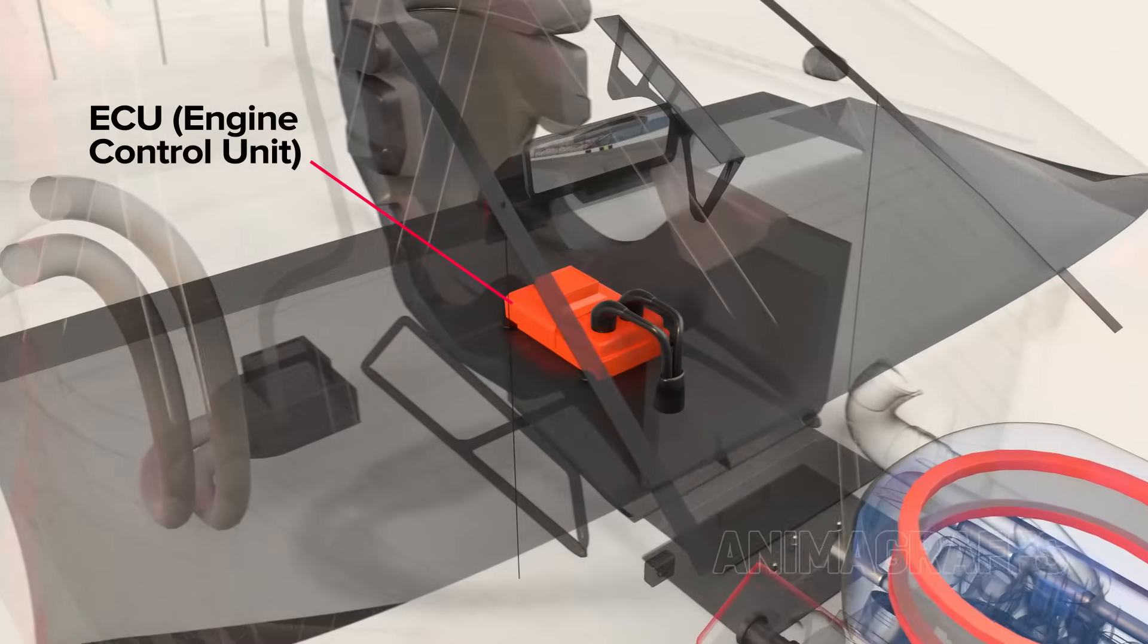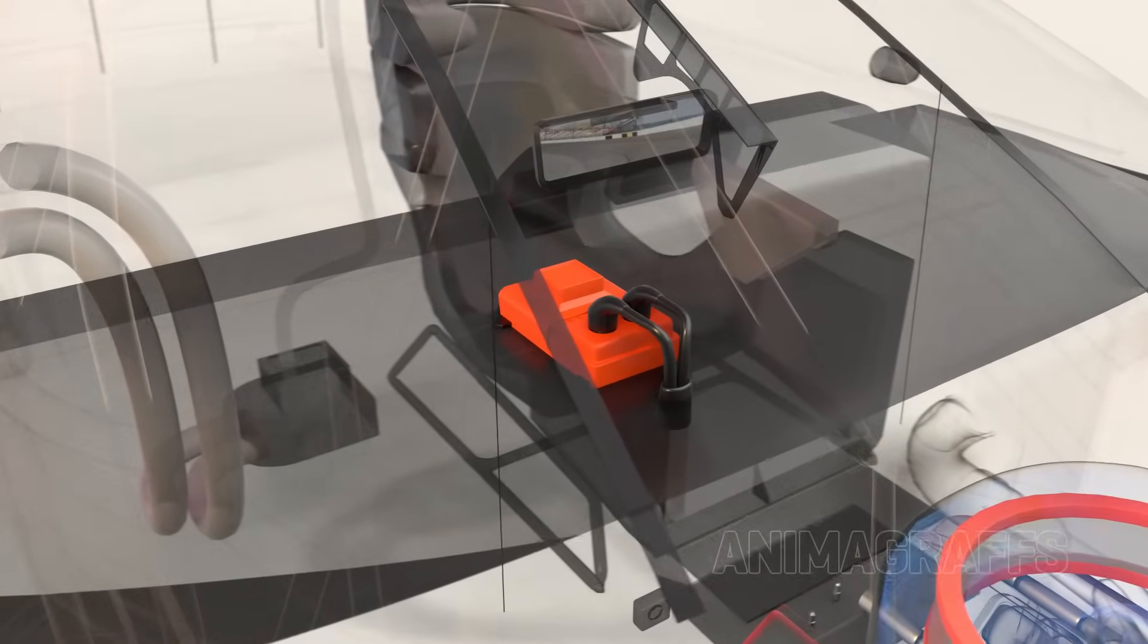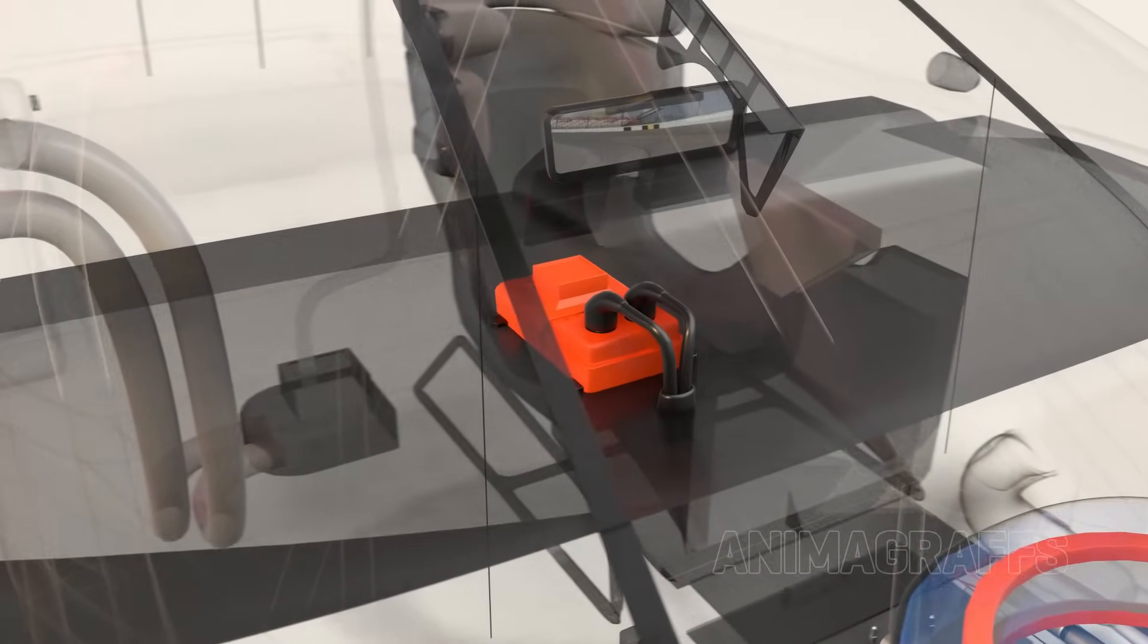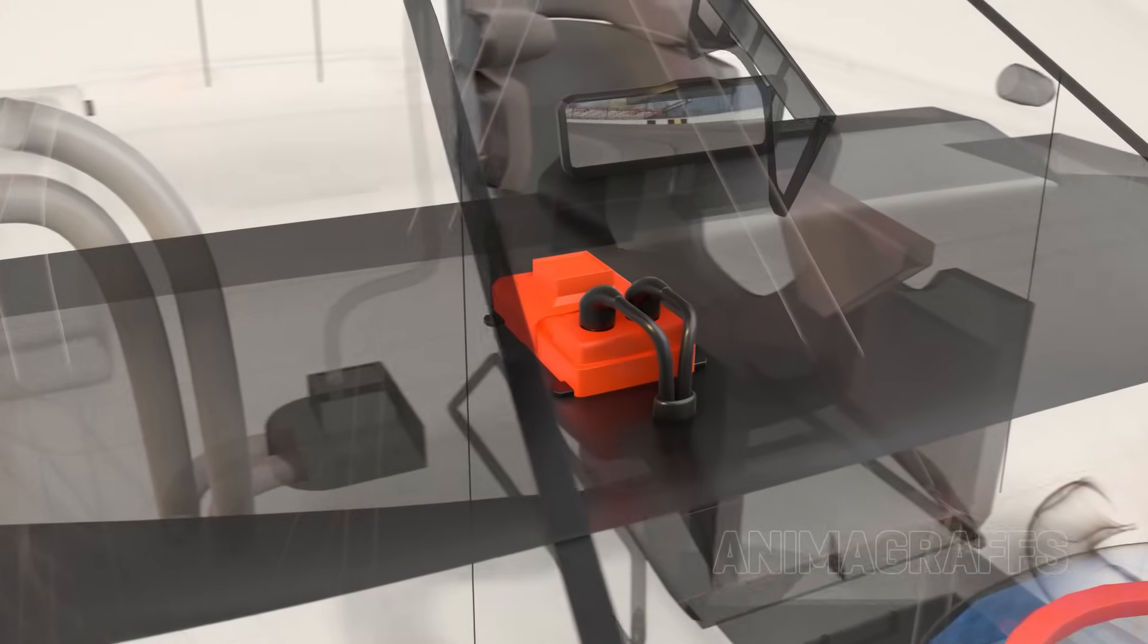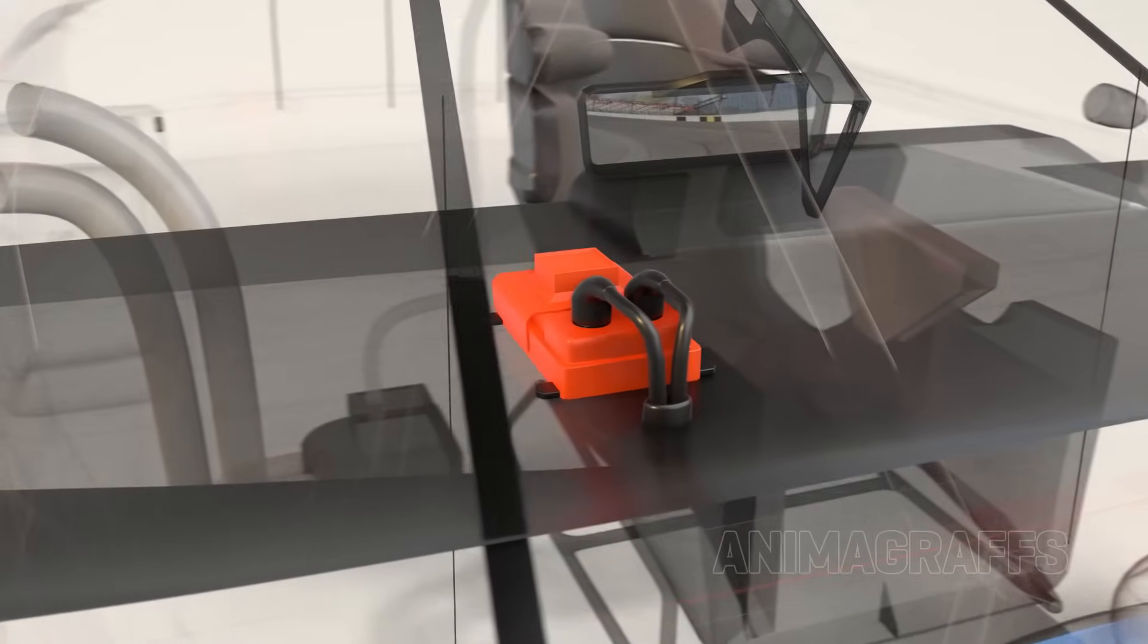The engine control unit, or ECU, sits inside the cockpit mounted to the dashboard. The ECU is a powerful computer that can monitor and tune engine performance characteristics.